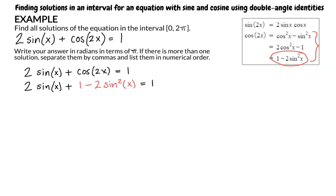Doing this, we write 2 sine of x plus 1 minus 2 sine squared of x equals 1. We can then subtract 1 from each side of the equation and write 2 sine of x minus 2 sine squared of x equals 0.